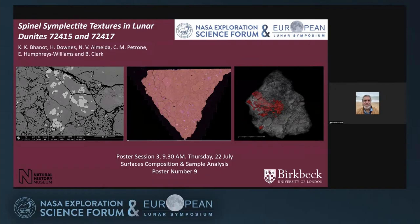Two other types of spinel symplectite have igneous texture resulting from interaction of basaltic melts with the shallow mantle prior to the Serenitatis impact. They are much smaller than the spinel-pyroxene clusters but can be imaged in 2D slices of CT scans. Another large symplectite type represents the youngest spinel texture and contains orthopyroxene, indicating low-pressure formation. It was most likely formed from impact melts during the Serenitatis event, which excavated the sample from the lunar mantle to the surface.